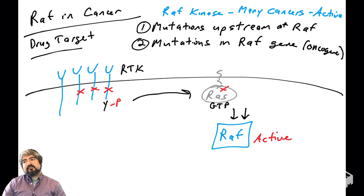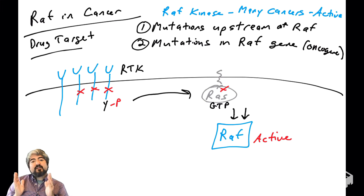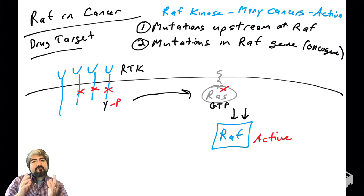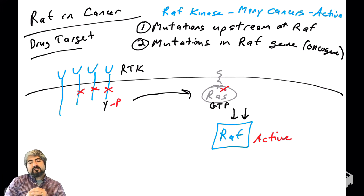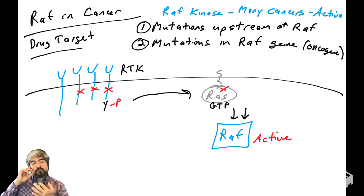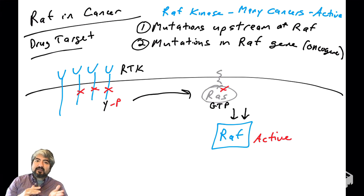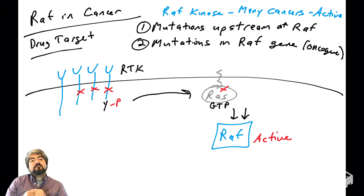Another upstream mutation is in the RAS gene itself, which we talked about in previous videos. If RAS is mutated, it abolishes its GTPase activity. If RAS is no longer a GTPase, it cannot shed that terminal phosphate and reset itself to being bound with only GDP — it is stuck bound to GTP. A mutation in the RAS gene that abolishes GTPase activity leads RAS to always be bound to GTP, and therefore RAF is always active, because RAS-GTP will always bind and activate RAF.